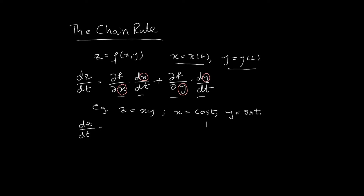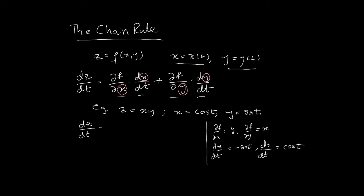Let's calculate the ingredients. The partial derivative ∂f/∂x is just y, and ∂f/∂y is just x. Then dx/dt = −sin(t), and dy/dt = cos(t). Putting all these pieces together into the chain rule formula, we get: dz/dt = (∂f/∂x)(dx/dt) + (∂f/∂y)(dy/dt), which becomes y·(−sin t) + x·cos(t).